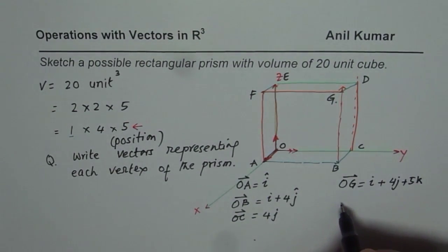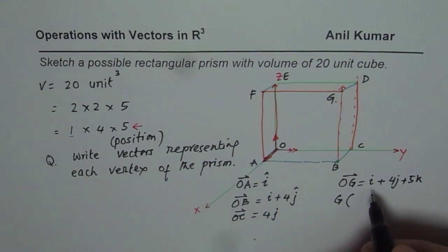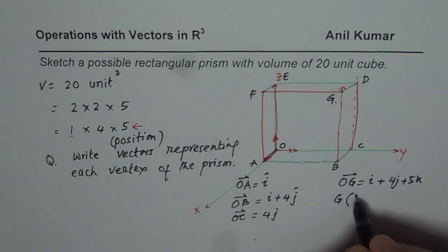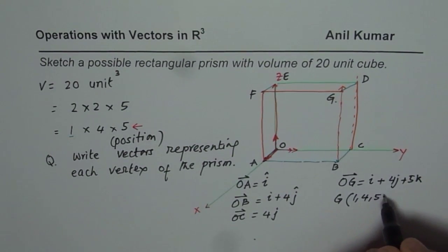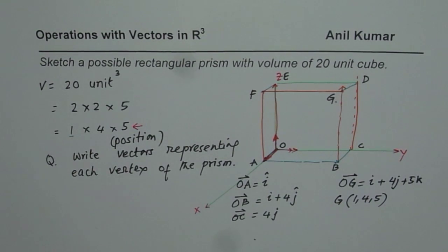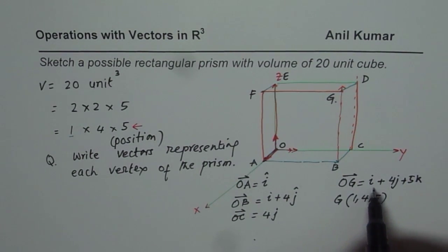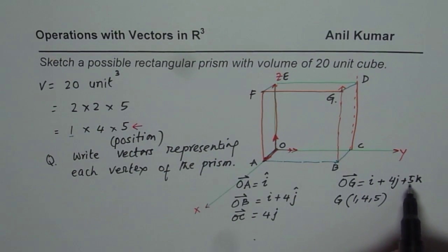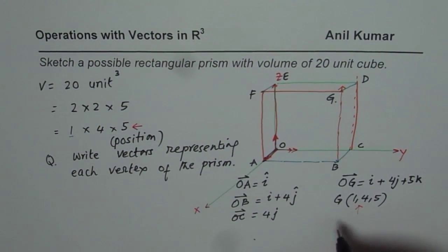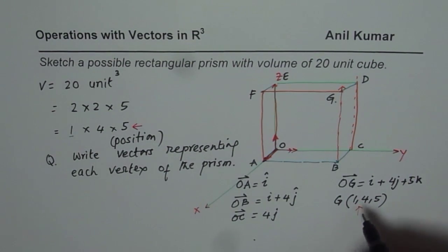Another way is to write the coordinate point of G as (1, 4, 5). This is another way of representing the vector. If I say vector G is (1, 4, 5), it really means OG, which can be written in standard form as i plus 4j plus 5k. Writing it as (1, 4, 5) is called the component form.